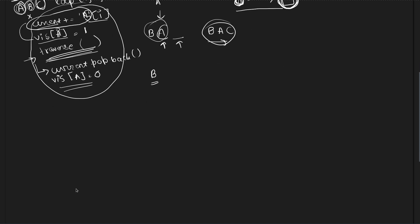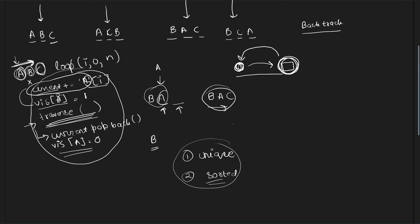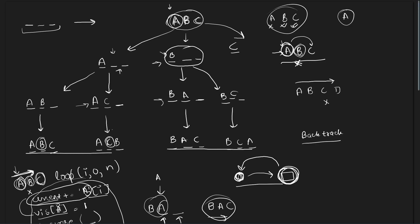The second part is ensuring permutations are unique and sorted. For sorted, if the original string is initially sorted and we traverse from left to right, character A will always be traversed before B. So all strings starting with A will appear before strings starting with B, and so on. This means if the original string is sorted, the permutations will automatically come out in sorted order — we don't need to do anything extra.